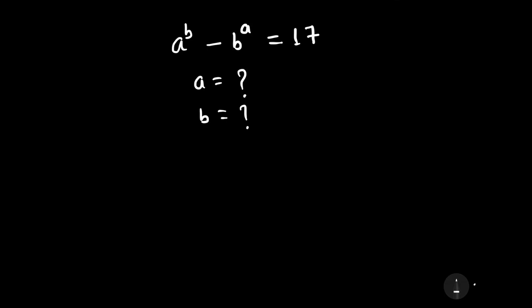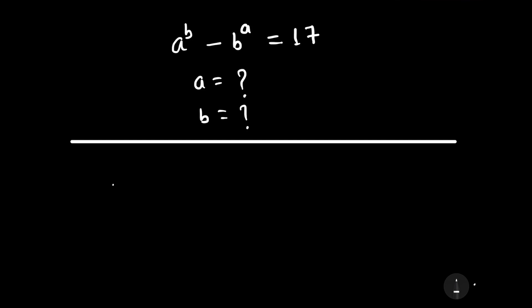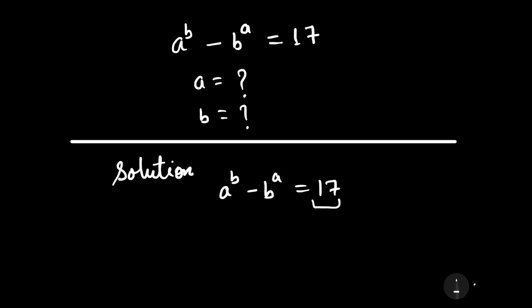Now let us start to solve this question. Our question is a to the power b minus b to the power a is equal to 17. If we observe this question, we can see that 17 is a prime number and there are only two factors of a prime number: 1 and the number itself. With the help of this information we can solve this equation.